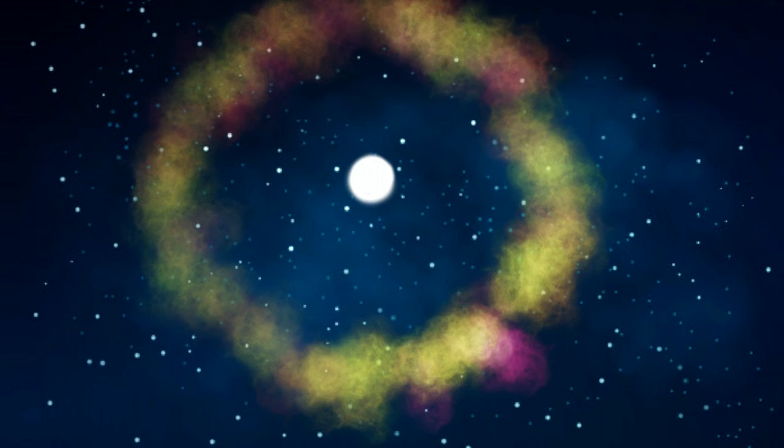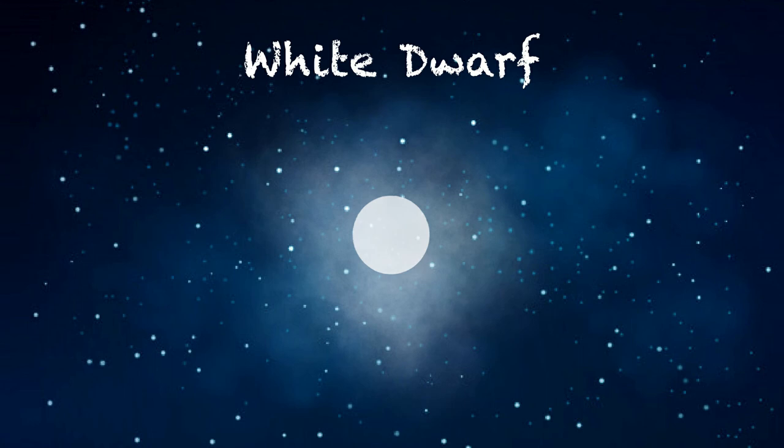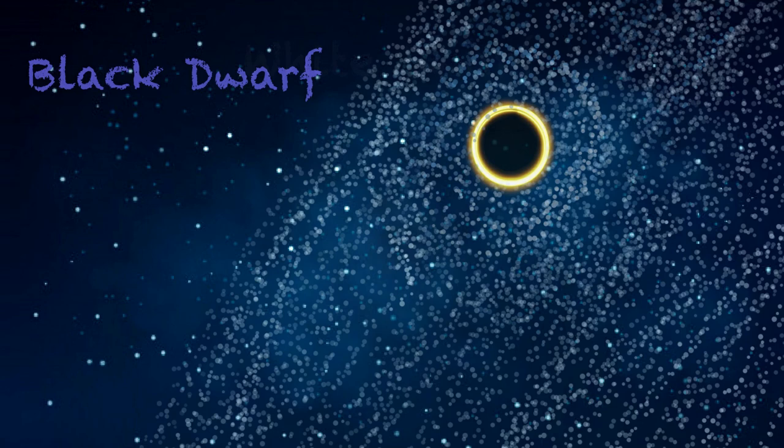The hot core of the star that is left behind cools and becomes a white dwarf, which is extremely dense. Once all of its energy is gone, it becomes a black dwarf.